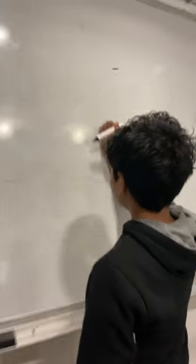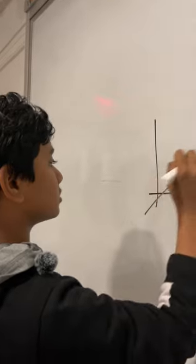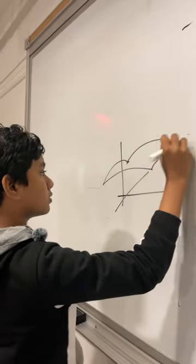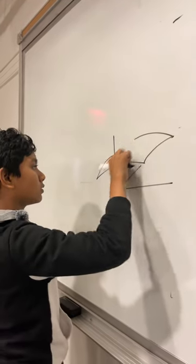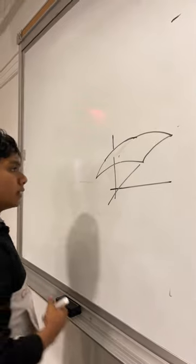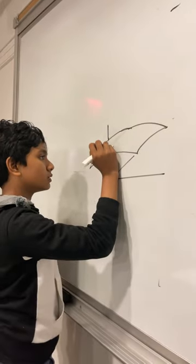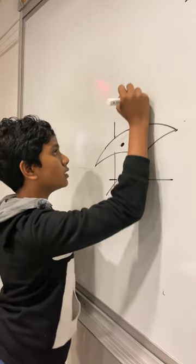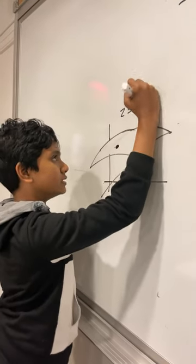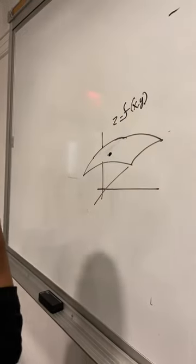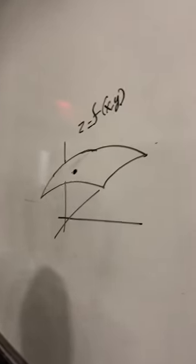So, the thing about it is that if we take a surface, like the one drawn here, and then we take some random point, so this is z equals f(x,y), just a generic way to say z is a function of x and y.